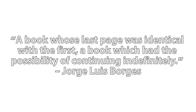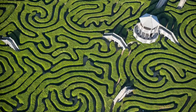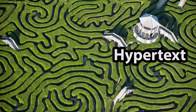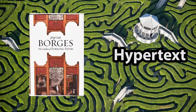"A book whose last page was identical with the first, a book which had the possibility of continuing indefinitely." — Jorge Luis Borges. Hypertext, as a concept, is thought to have first emerged in 1941 with a short story by Jorge Luis Borges, The Garden of the Forking Paths.